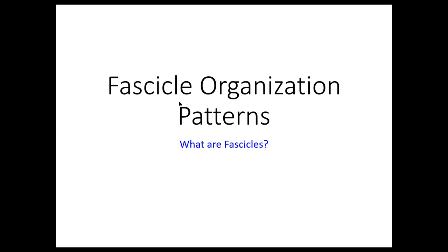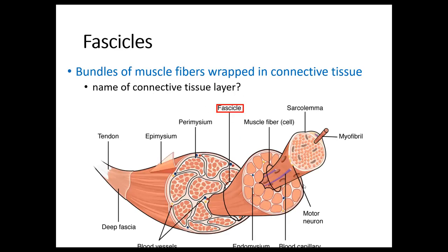Now let's get into fascicle patterns. A fascicle is a group of muscle fibers. One muscle fiber is a cell; collected together they create a fascicle. The connective tissue layer surrounding a single muscle fiber is the endomysium. The layer surrounding a full fascicle is the perimysium — 'peri' meaning around. And to review, the epimysium surrounds one full skeletal muscle — the full organ.